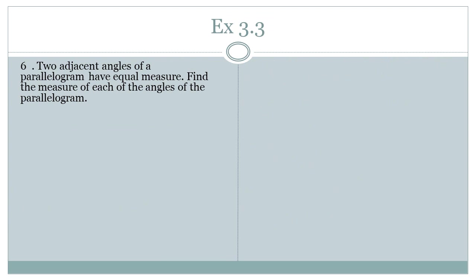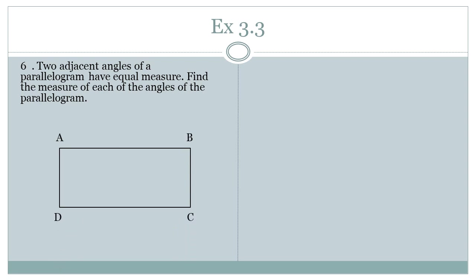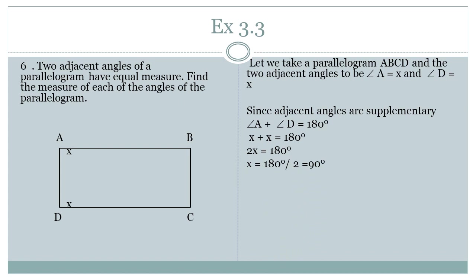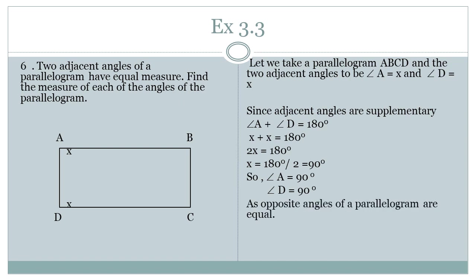Question 6: Two adjacent angles of a parallelogram have equal measure. Find the measure of each angle. Let both adjacent angles be x. Since adjacent angles are supplementary, x + x = 180°, so x = 90°. Therefore angle A = angle D = 90°. Since opposite angles are equal, angle C = 90° and angle B = 90°. All four angles are 90 degrees, so this figure can be a rectangle or a square.